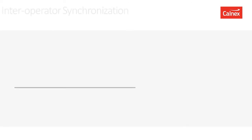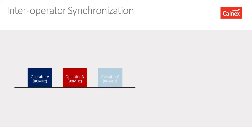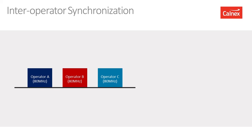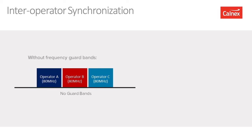Another factor relevant when discussing interference with 5G is synchronization between operators. Most mobile network operators are allocated frequencies and protect against using adjacent frequencies by employing guard bands. Here's an example where three operators are allocated spectrum with a 20 megahertz guard band between each of those networks. However, with 5G and the demand to fully utilize spectrum, operators are pushing to remove — and are removing — that guard band.